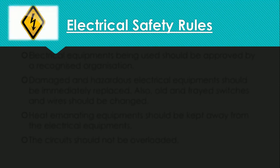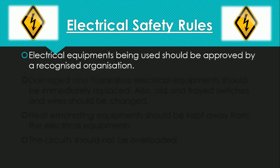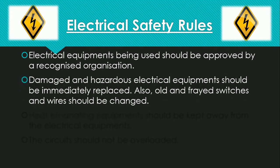Next we have electrical safety rules — safety rules related to electricity. The electrical equipment being used should be approved by a recognized organization. Equipment used at a workplace should be from a reputed organization and not local ones that get easily damaged. Also, old and frayed switches and wires should be changed. Switches that have become very old, whose wires are coming out or that cannot handle the load, should be changed immediately.